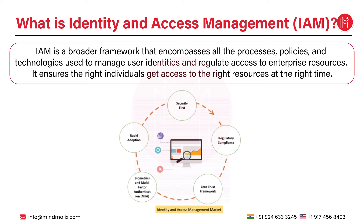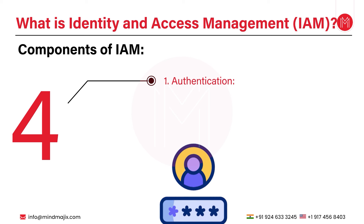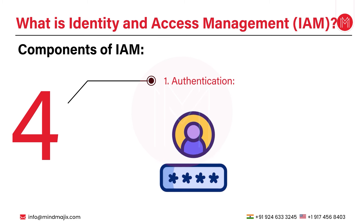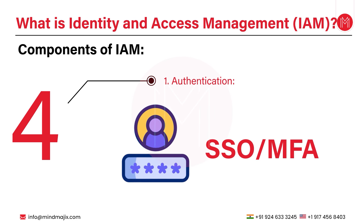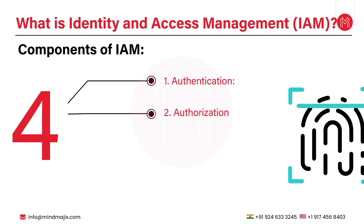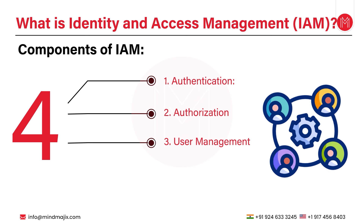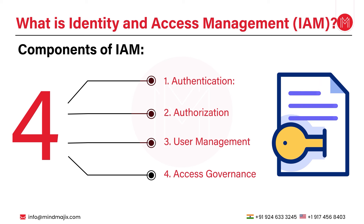The next point is what is identity and access management or IAM. IAM is a broader framework that encompasses all the processes, policies, and technologies used to manage user identities and regulate access to enterprise resources. It ensures that the right individuals get access to the right resources at the right time. IAM has four components: authentication — verifying who the user is, typically via SSO or MFA; authorization — defining what resources the user can access; user management — creating, updating, and deleting user identities; and access governance — monitoring and managing user access rights.